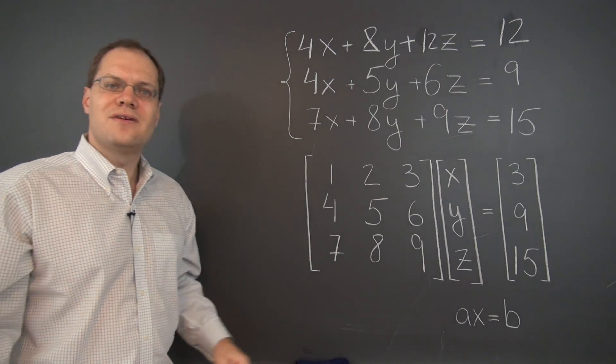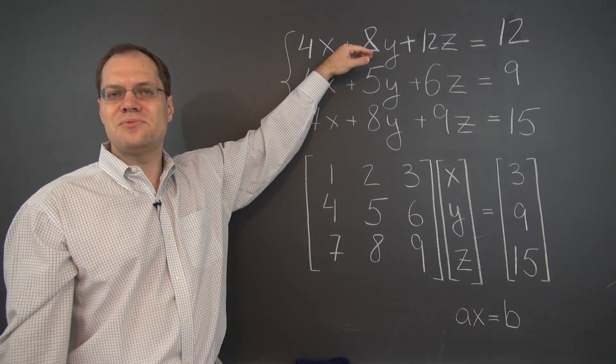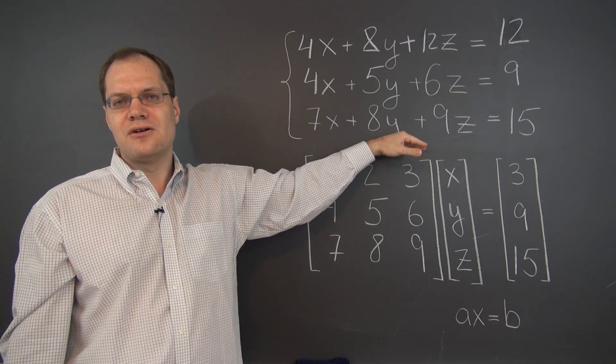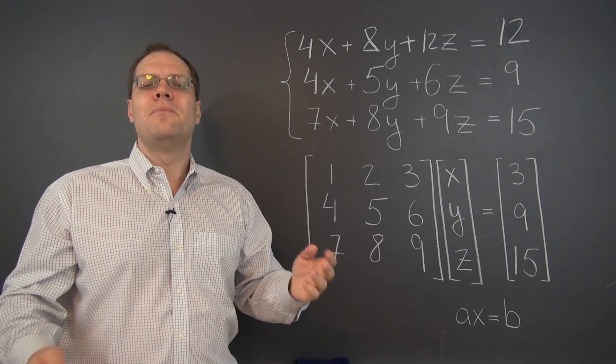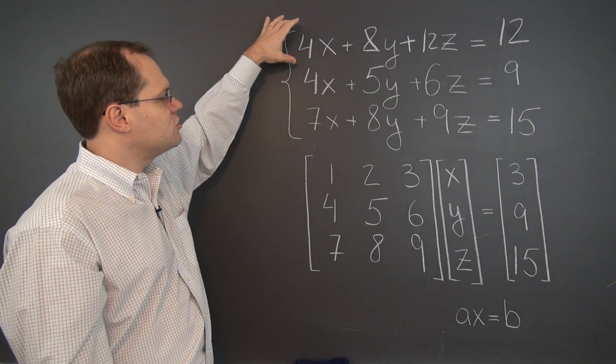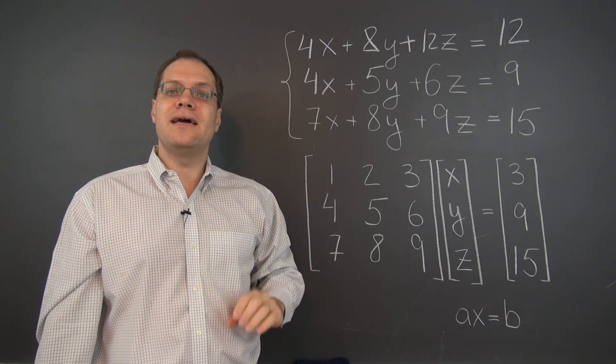So now we have a system. Nothing has been eliminated yet, but at the very least we still have a system that has the same set of solutions as before. So we didn't make anything better, but at least we didn't make anything worse. And one thing that we've learned is that what we can do is multiply an entire equation by a number.